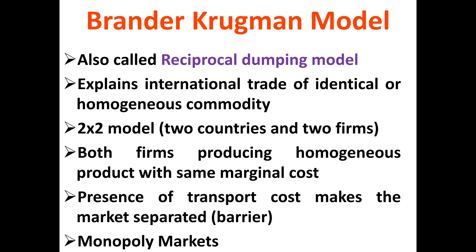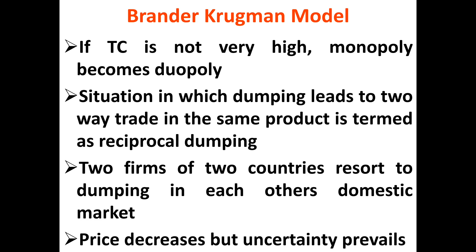Now, let us assume that the transportation cost is not very high and the home firm realizes there is a possibility of selling their products in the foreign country. On the other hand, the foreign firm realizes there is a possibility of selling their products in the home country. Then this same homogeneous commodity, produced by both the home firm and the foreign firm, will go to each other's country. The market structure, which was initially monopoly, now becomes duopoly in nature, which is the smallest form of oligopoly. There will be a situation of dumping, leading to two-way trade of the same product — that's why this model is also known as the reciprocal dumping model.